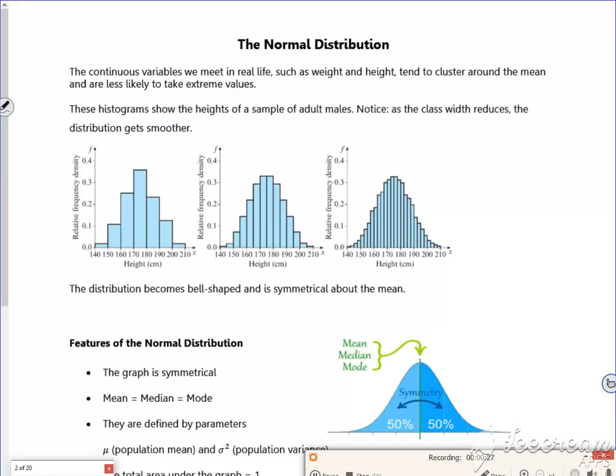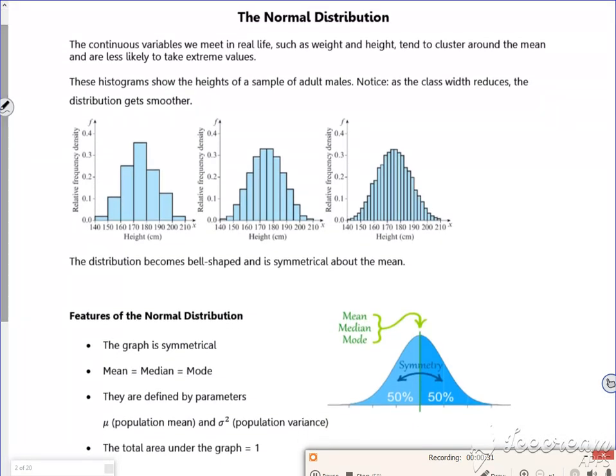You remember with binomial it was discrete, it was success and failure. Well the normal distribution isn't discrete, it's continuous.